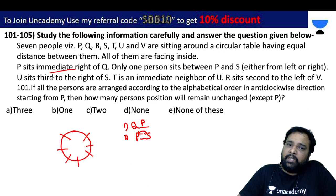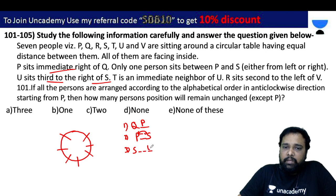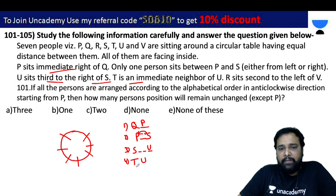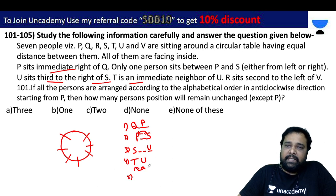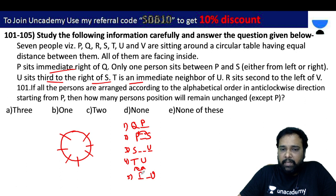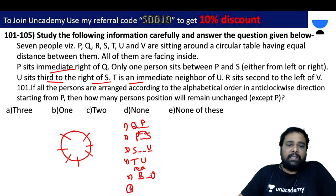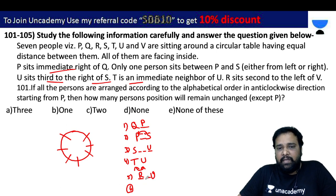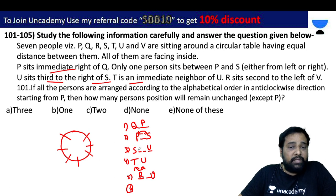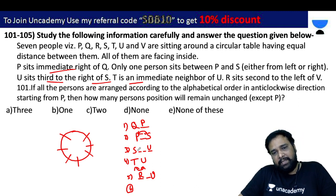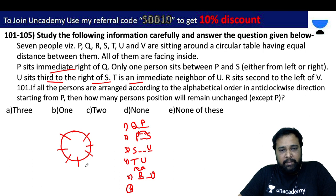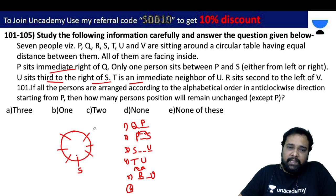We have two possibilities: U sits third right of S, and S is the third right of U. T is the immediate right of U. R is second left of V. We need to work through these placement conditions carefully.